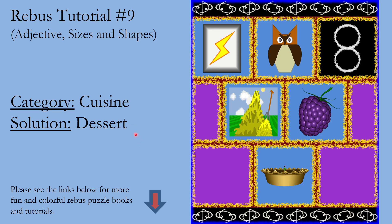For this puzzle, the category is Cuisine and the solution is Dessert. Here again we have another type of adjective situation where we have sizes and shapes.